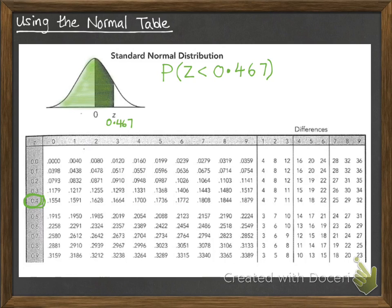The table we read off by looking at 0.4, then the 6, and seeing where they meet up. So we've got 0.1772.